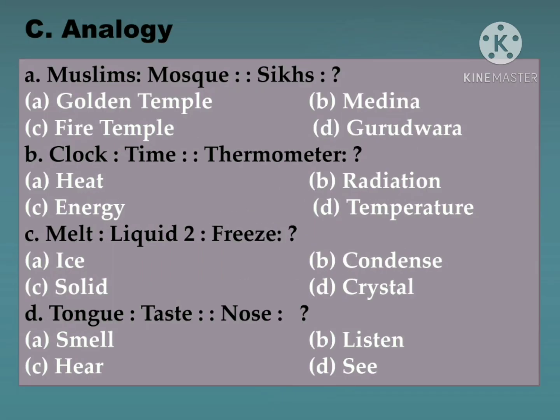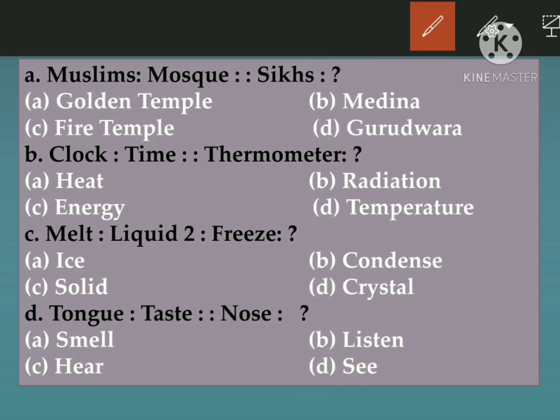Part C is analogy. You are given pairs and must find the word that completes another pair by identifying the relationship. First: Muslims is related to Mosque — Muslims pray at a mosque. So Sikhs pray at — Golden temple, fire temple, Medina, or Gurudwara? The correct answer is Gurudwara.